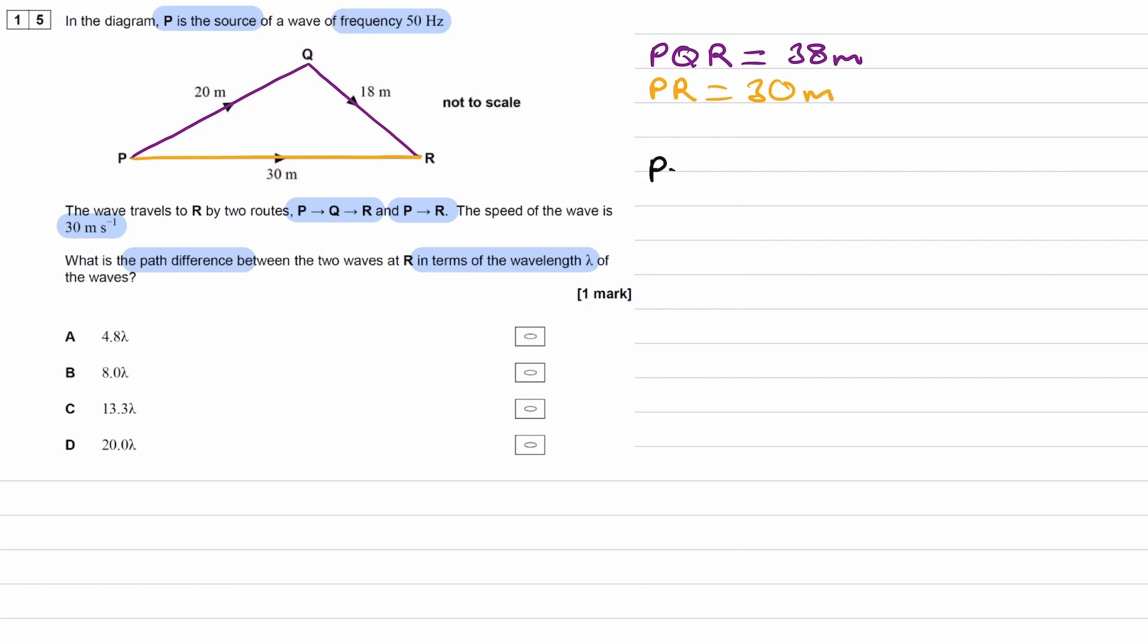So the path difference would just be the difference in length between those two things. Path difference is the difference in distance traveled by two waves. That would in this case be the 38 minus the 30, so 8 meters. So that is our path difference, but we want it in terms of wavelength. So we need to work out what the wavelength is.